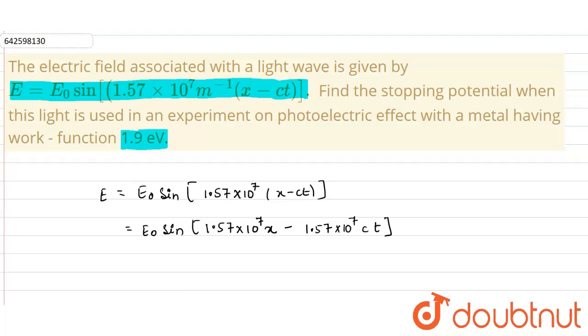So from this, what we get is our omega as 1.57 into 10 raised to the power 7 c.